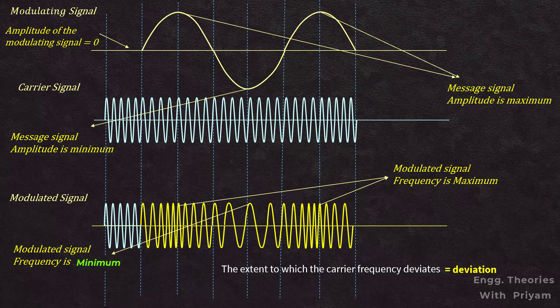To achieve frequency modulation, this deviation represented by Δf is directly proportional to the instantaneous value of the modulating signal m(t), and the rate at which the frequency variation takes place is equal to the modulating signal frequency fm. The amplitude of the frequency modulated signal always remains constant.